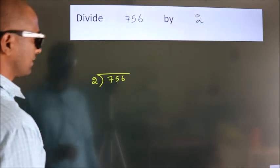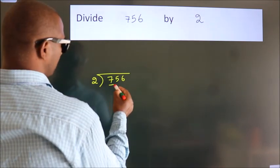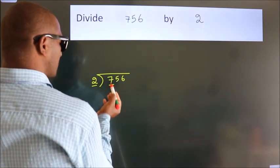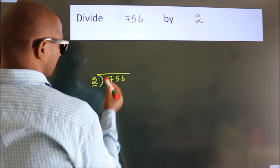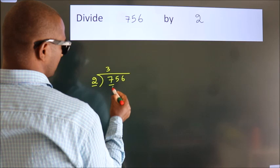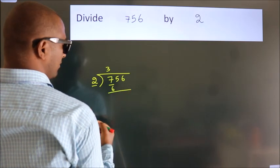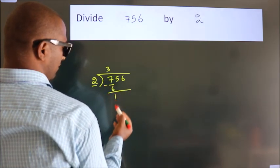Next, here we have 7, here 2. A number close to 7 in the 2 table is 2 times 3 is 6. Now we subtract and get 1.